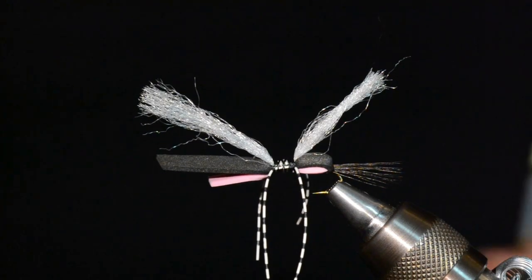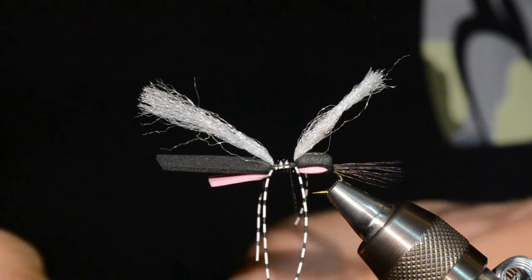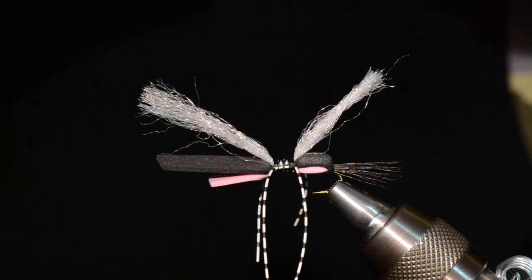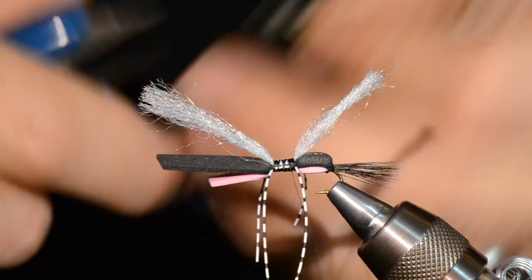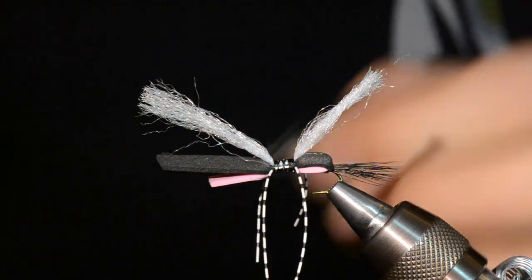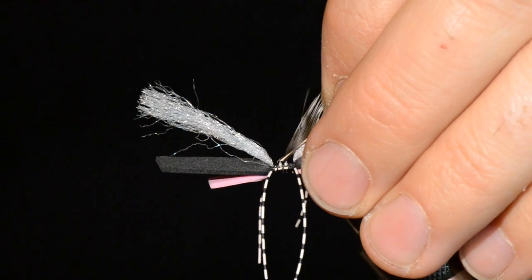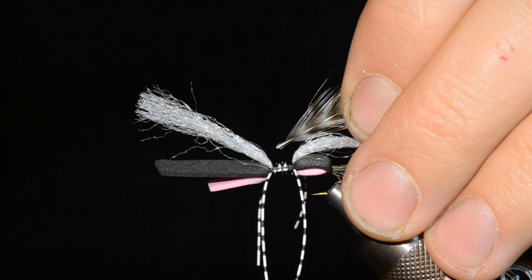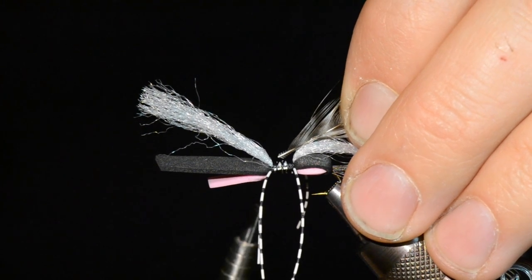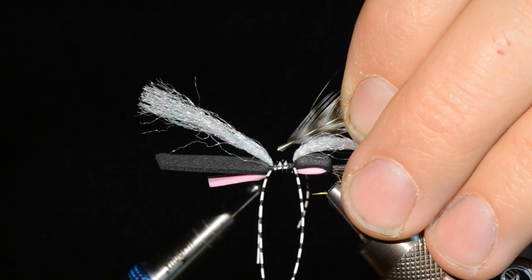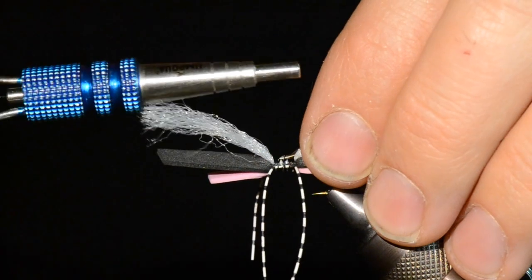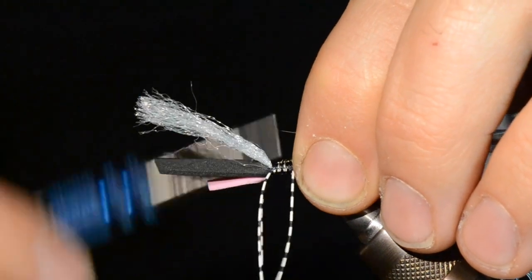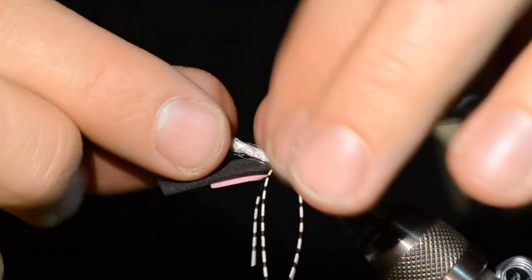Next step is to tie our hackle in. This is a Whiting silver grade cape. Super nice, ton of barbs, really good for this fly. I like this to be a very heavily hackled fly, as much as you can get in there. These high barb counts of these Whiting feathers are pretty tough to beat. A little tip there too, I don't like to strip those barbs off. I like to snip them like that. Those little butts that are left on there give you just a little bit more that your thread can grab ahold of. I'm going to tie that right on top. A few wraps to make sure it's nice and secure. And then leave your thread right up here next to where you tied the legs up to the front there.